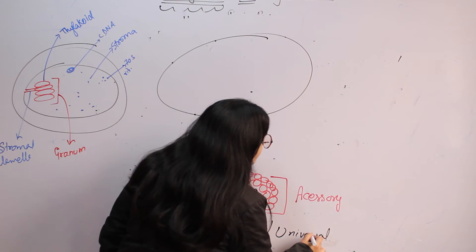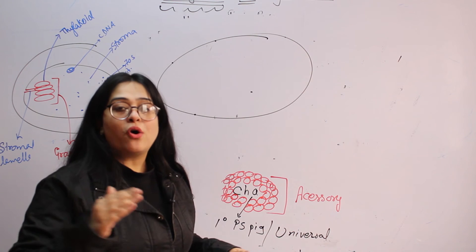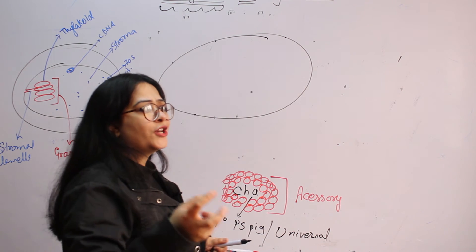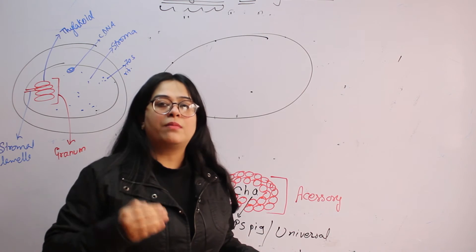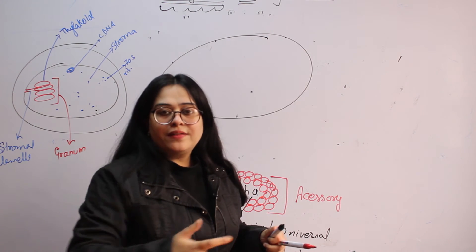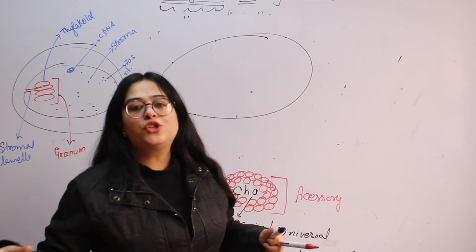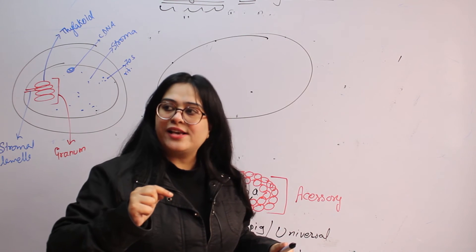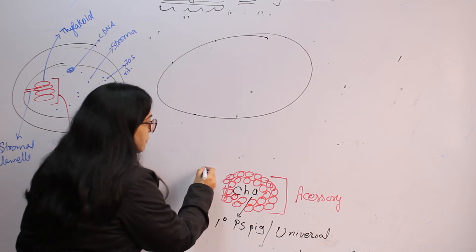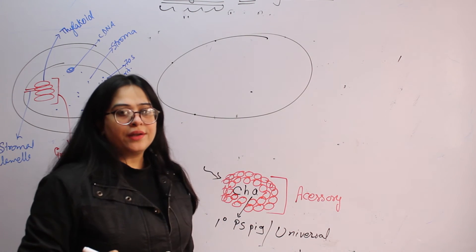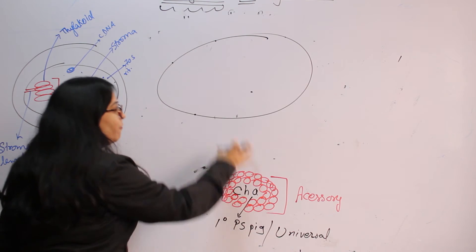Universal photosynthetic pigment, that is in each and every plant any other pigments can be present. Suppose red algae, then phycoerythrin pigment is going to be there in high amount. In brown algae, there is going to be fucoxanthin in high amount. So any other pigment can change, but chlorophyll A is going to be there in each and every plant.